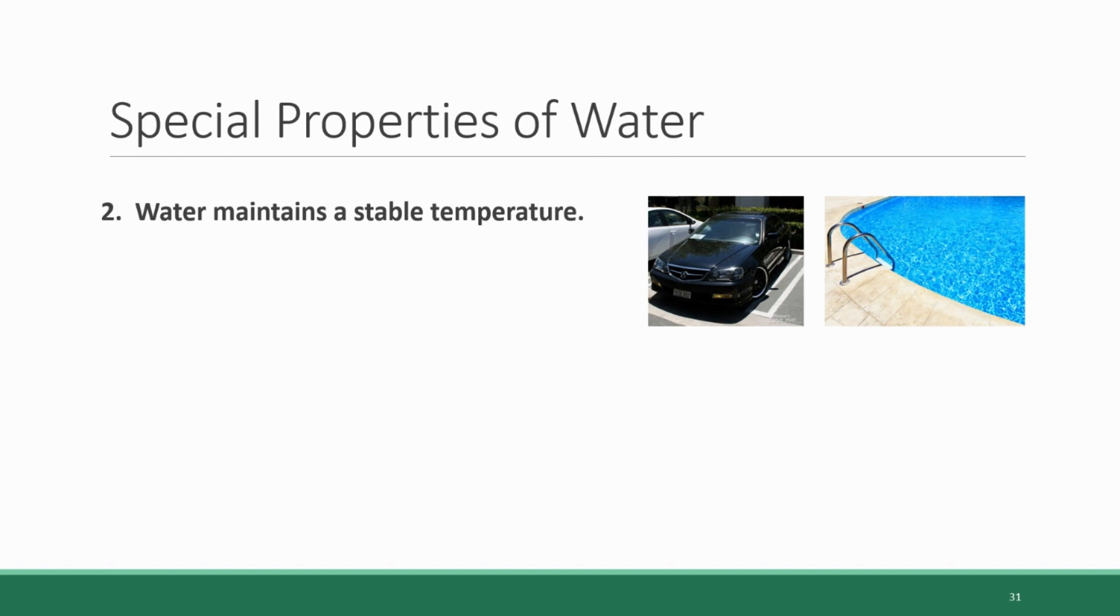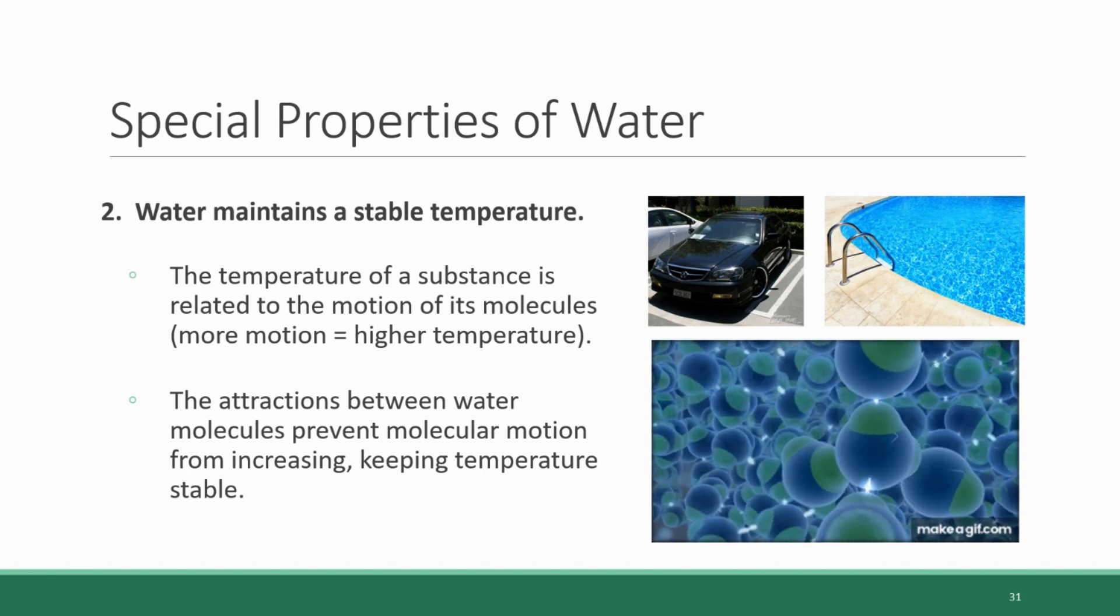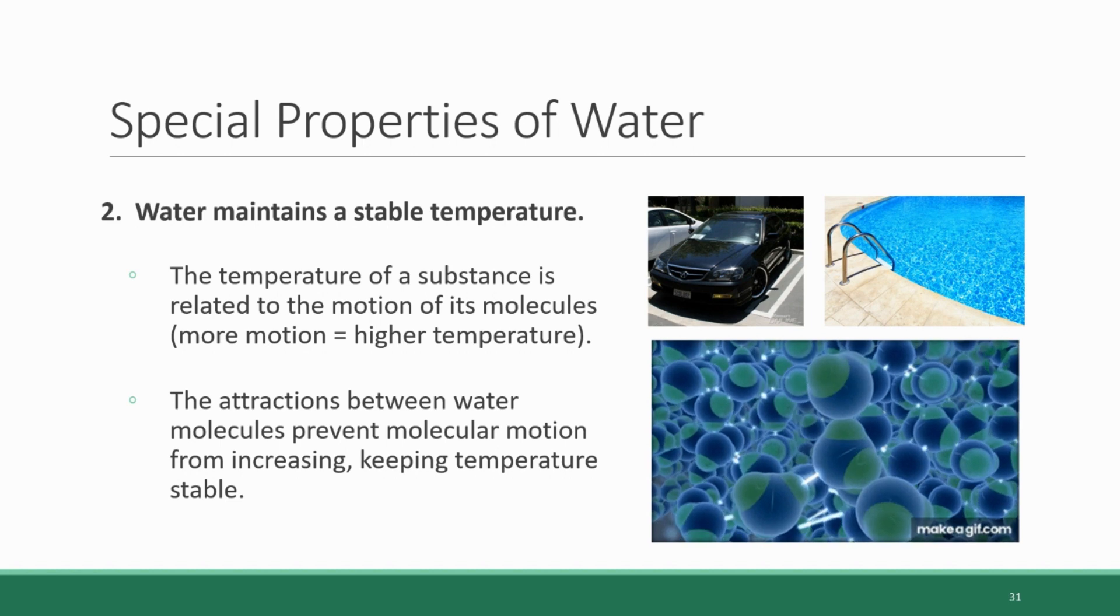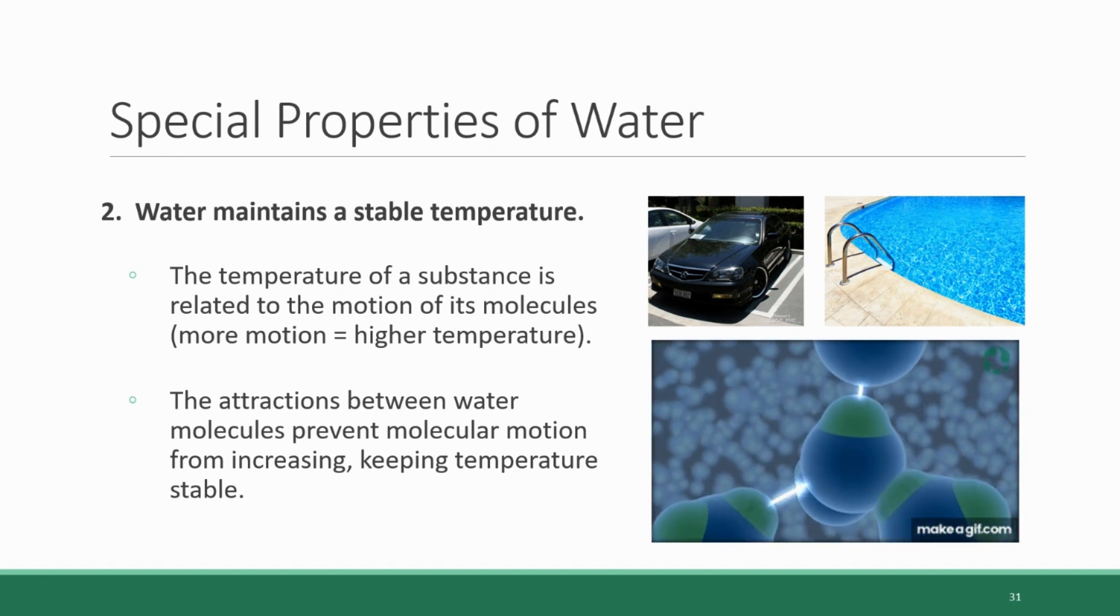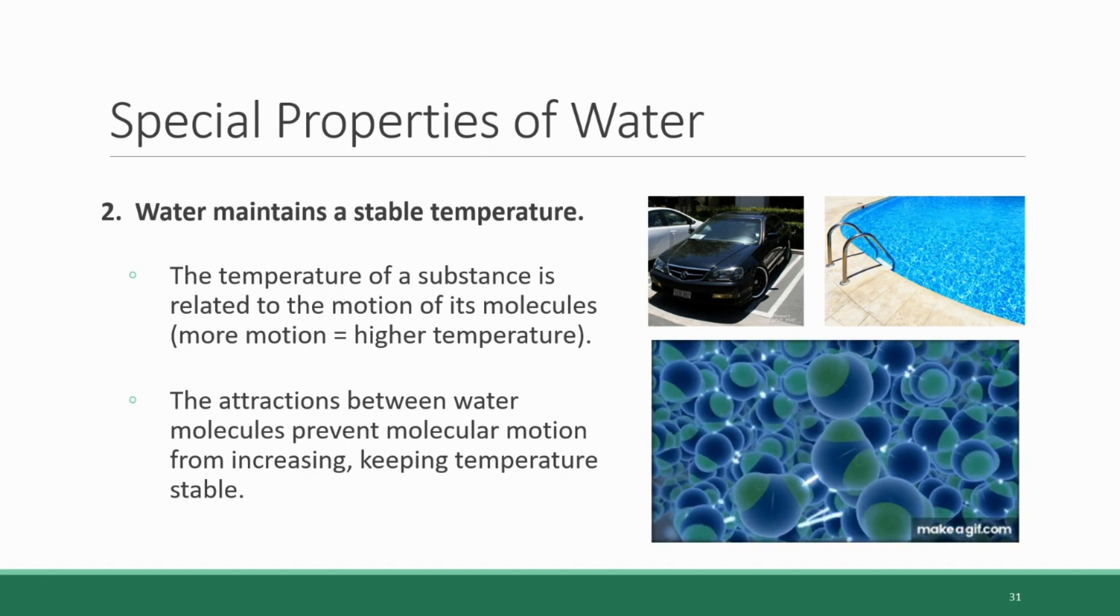That's not because one is getting more heat than the other—the weather conditions aren't different—it's because of the substance and that substance's ability to stabilize temperature. The temperature of a substance is related to the motion of its molecules. The faster and more erratically molecules move, the higher the temperature. When it comes to water, those attractions between water molecules keep the motion calm and steady. They can't move erratically because they're stuck together in this network, so temperature remains stable, unlike the metal hood.